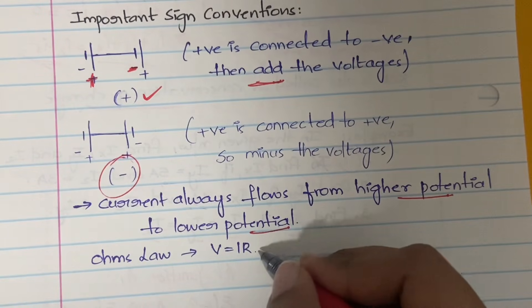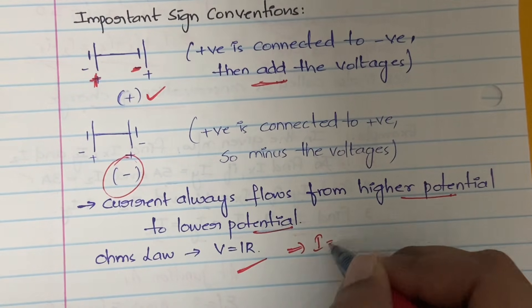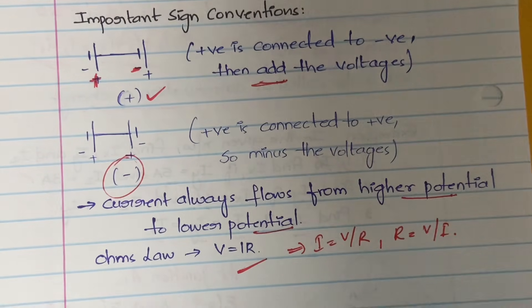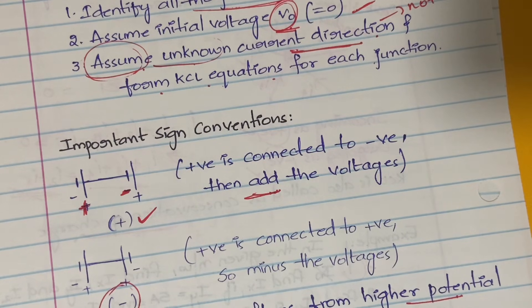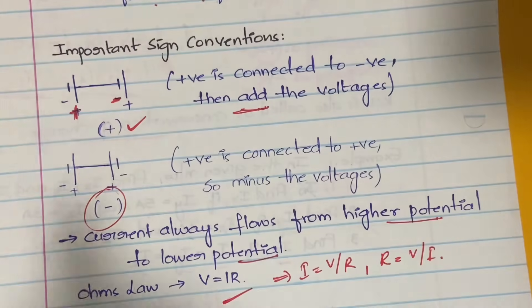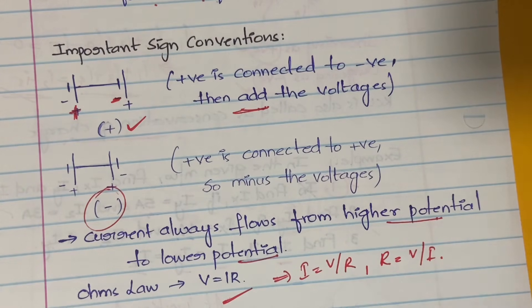Remember Ohm's Law: V = IR, from which I = V/R and R = V/I. You need to remember these while solving complicated circuits. In upcoming videos I'll take a complicated circuit and explain how to apply KCL to find currents, voltages, and resistances. Thanks for watching the video till the end. If you have any doubts, let me know in the comment section and let me know what other videos you need from my channel. Thank you.